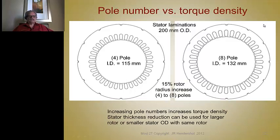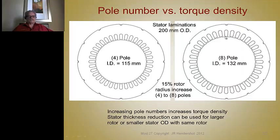Here is an example of pole number versus torque density. With four poles, you require a thick yoke — just like an induction motor. Going to eight poles with the same OD, you only need half the stator yoke thickness, so the ID increases from 150 mm to 132 mm. This gives a larger radius, and since torque is a moment of force, a larger air gap radius with the same force produces much higher torque density, while the larger surface area also provides more flux.